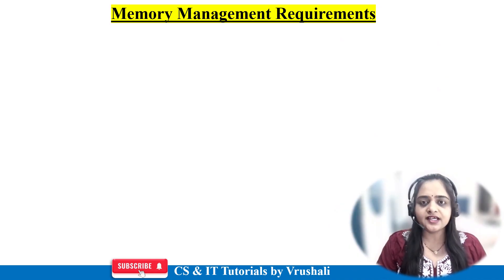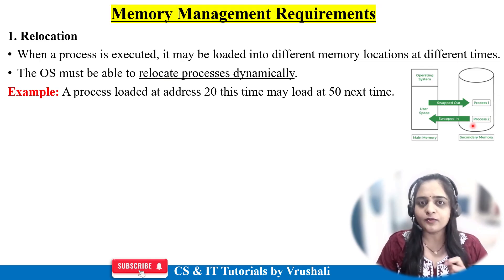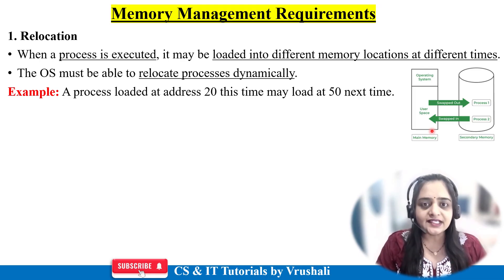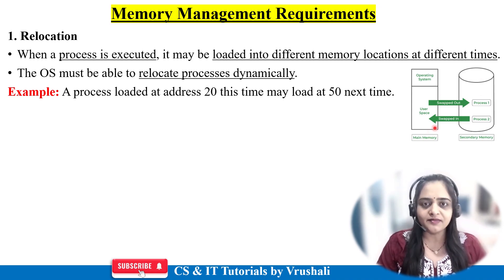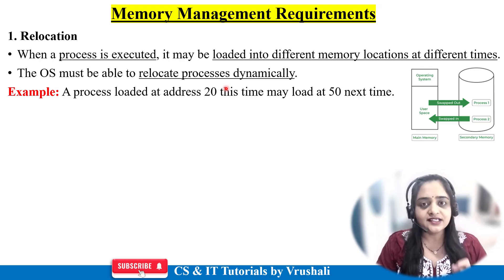The first requirement is relocation. Suppose you want to execute a .cpp (C++) programming file. This file is currently stored in secondary memory. When you want to execute it, the file moves from secondary memory to main memory. After completing execution, it moves back from main memory to secondary memory. The operating system must be able to relocate processes dynamically — this is called relocation.